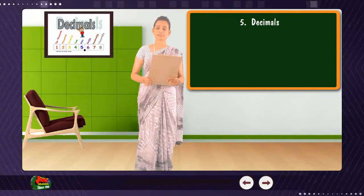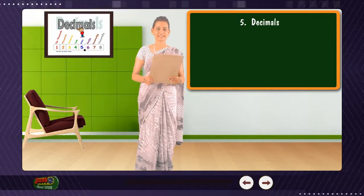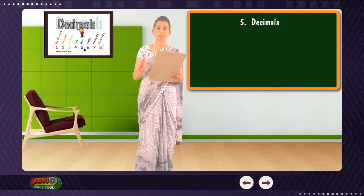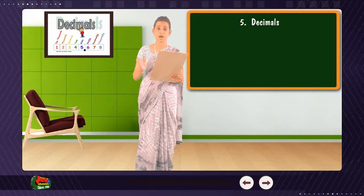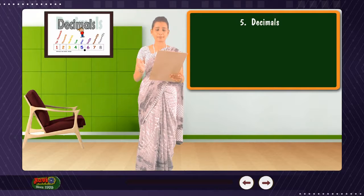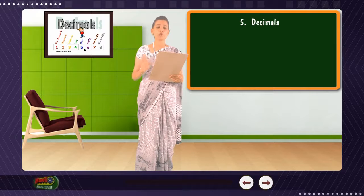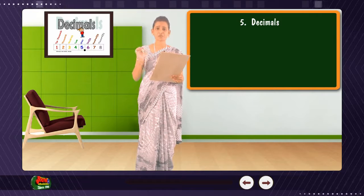Chapter 5: Decimals. Hi friends, the decimal point is the most important part of a decimal number. Without it, we don't know what each position means.